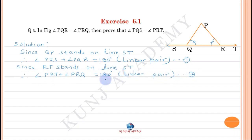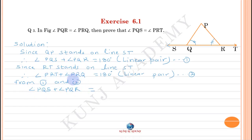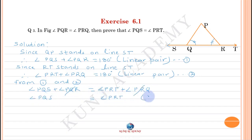From equations 1 and 2, the right-hand sides are equal, therefore the left-hand sides are also equal. Since angle PQR equals angle PRQ (given), these two angles are equal and we can cancel them. Therefore angle PQS equals angle PRT. Proved.